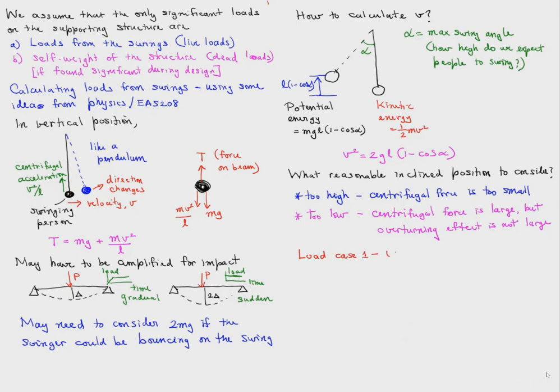So we consider load case 1, which is the vertical configuration with the largest centrifugal force because the velocity is highest in the vertical position. And load case 2, which we want to be a suitable inclined position in which we want to get the greatest overturning effect.